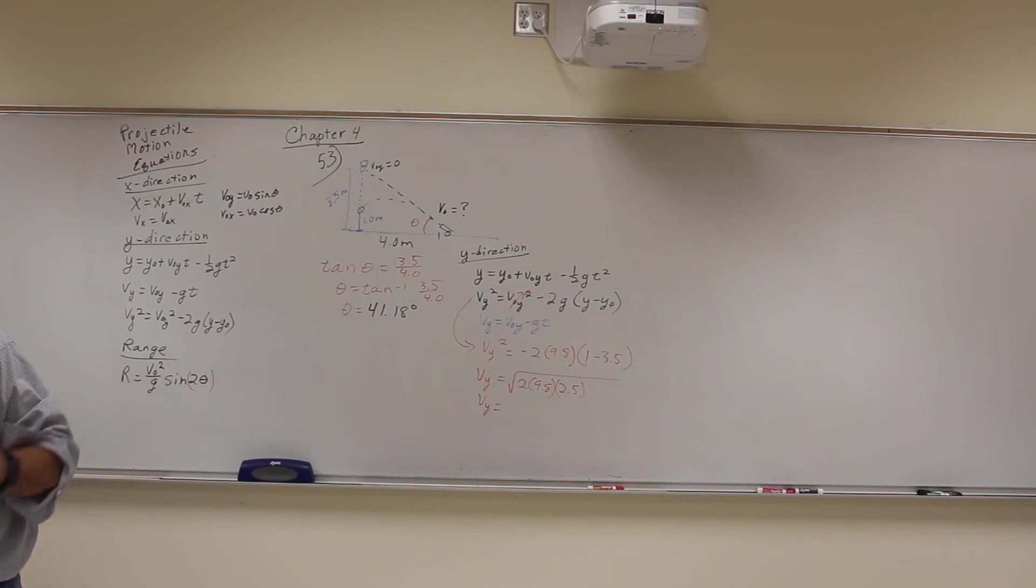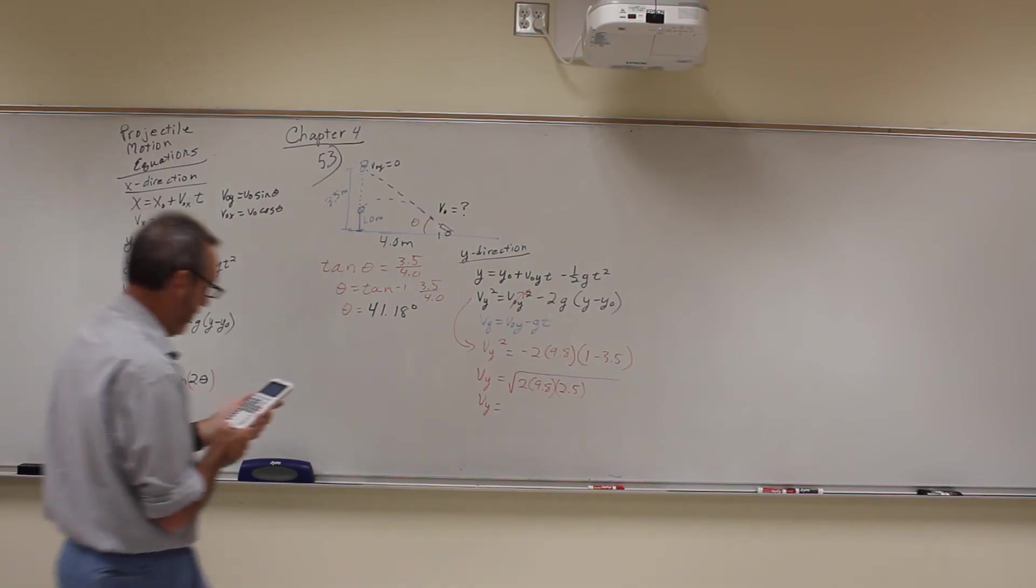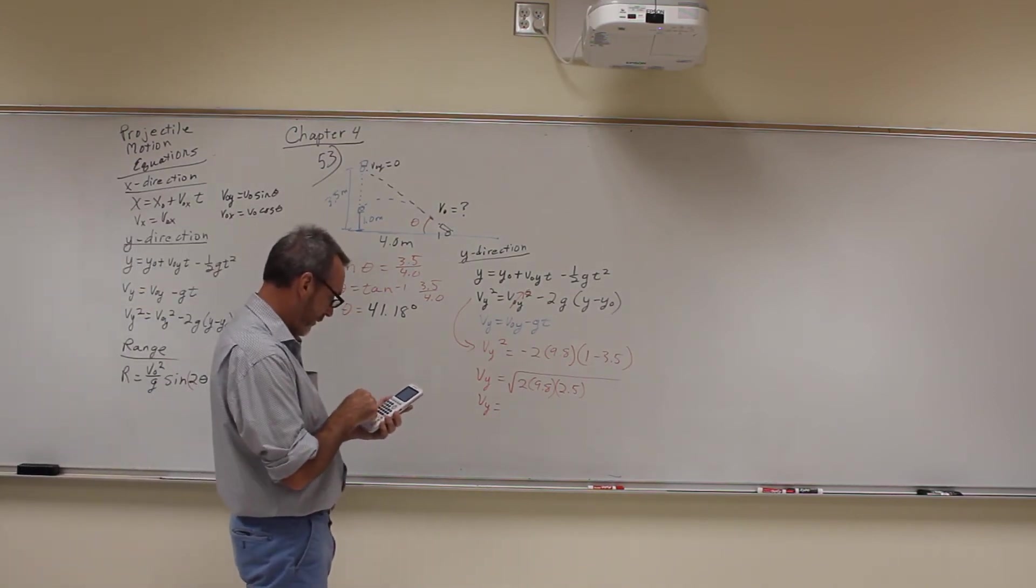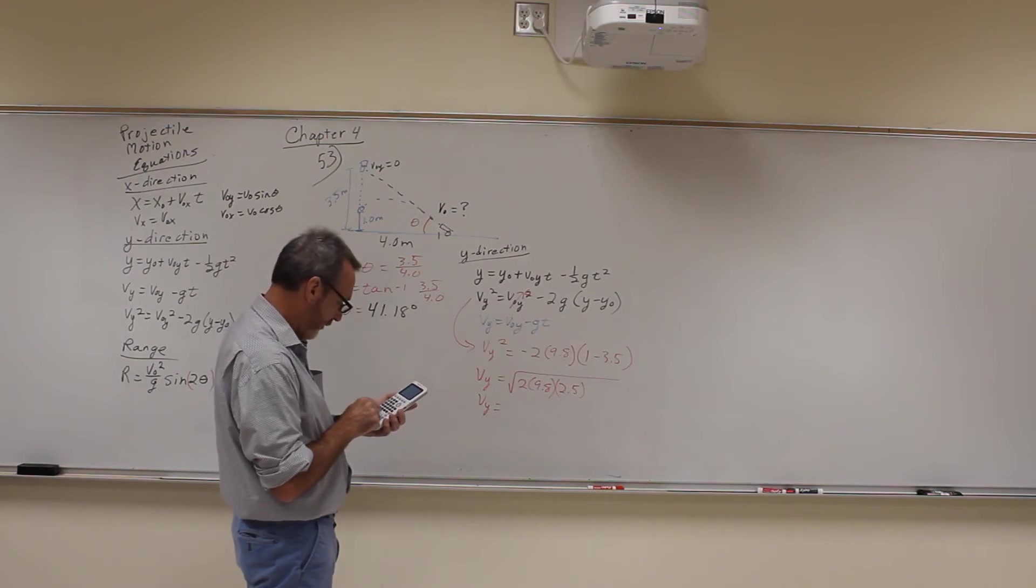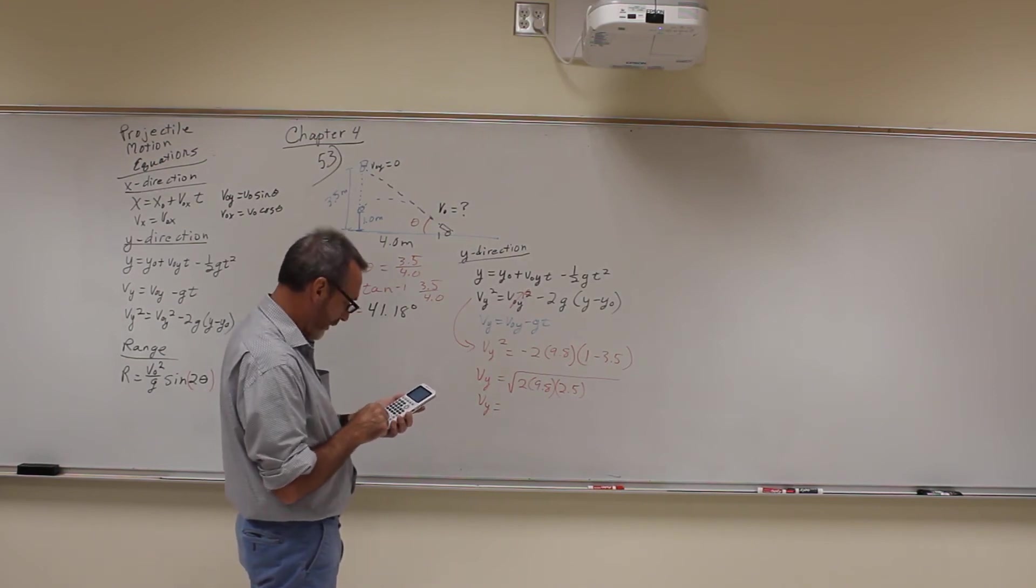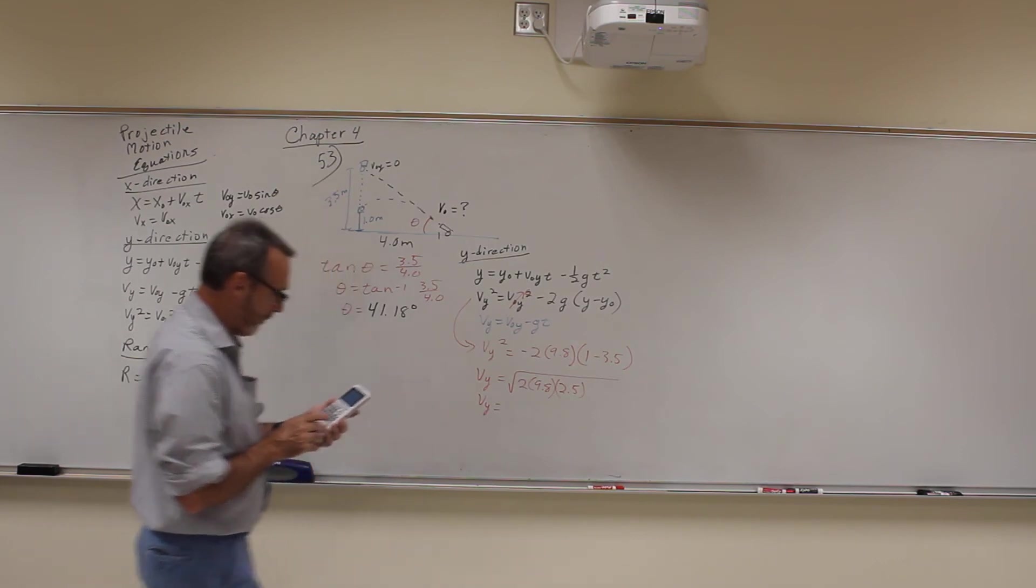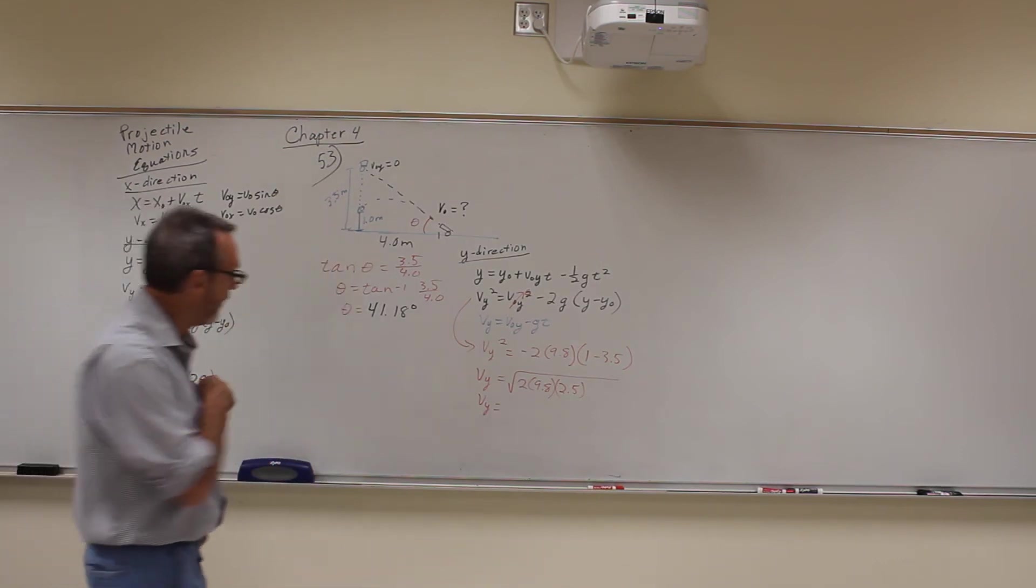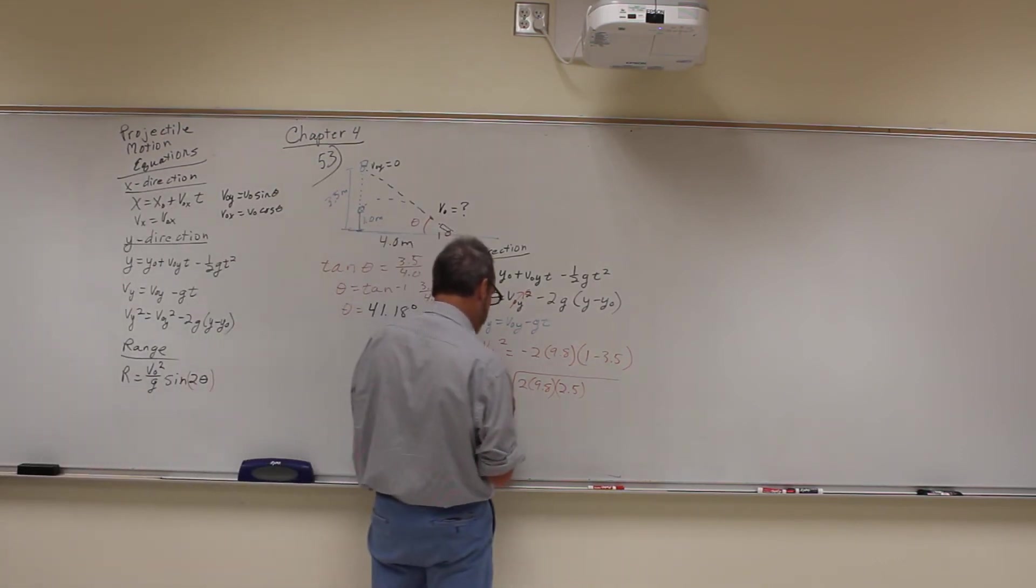Square root of 2 times 9.8 times 2.5, and I get 7. So this is 7 meters per second.